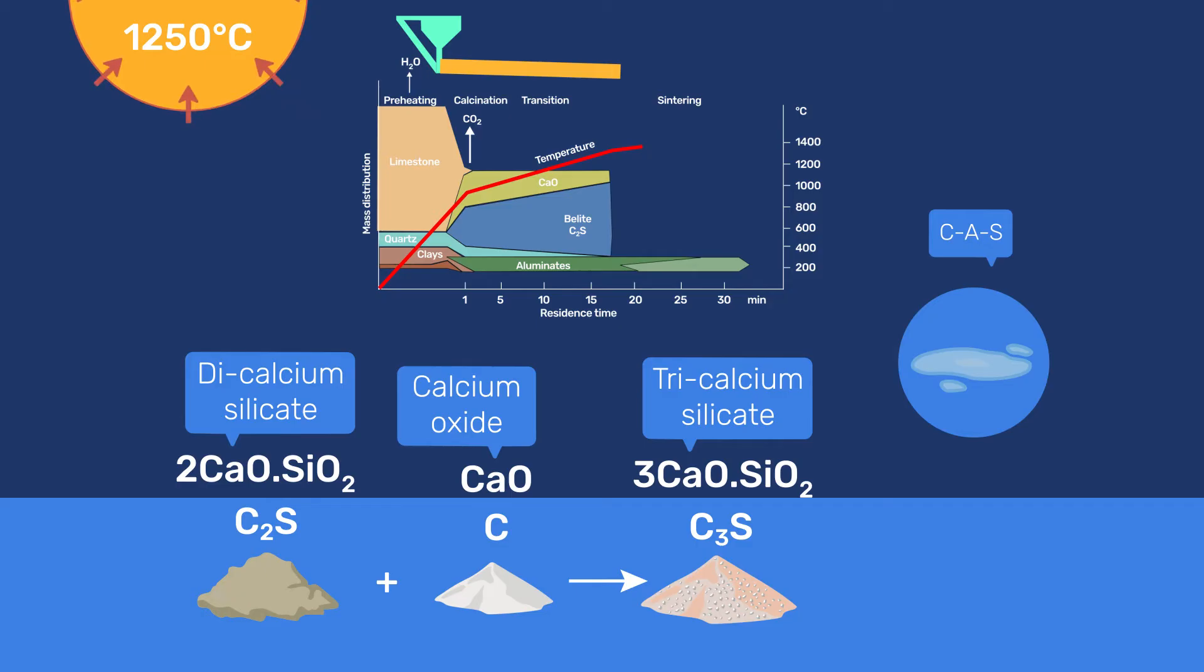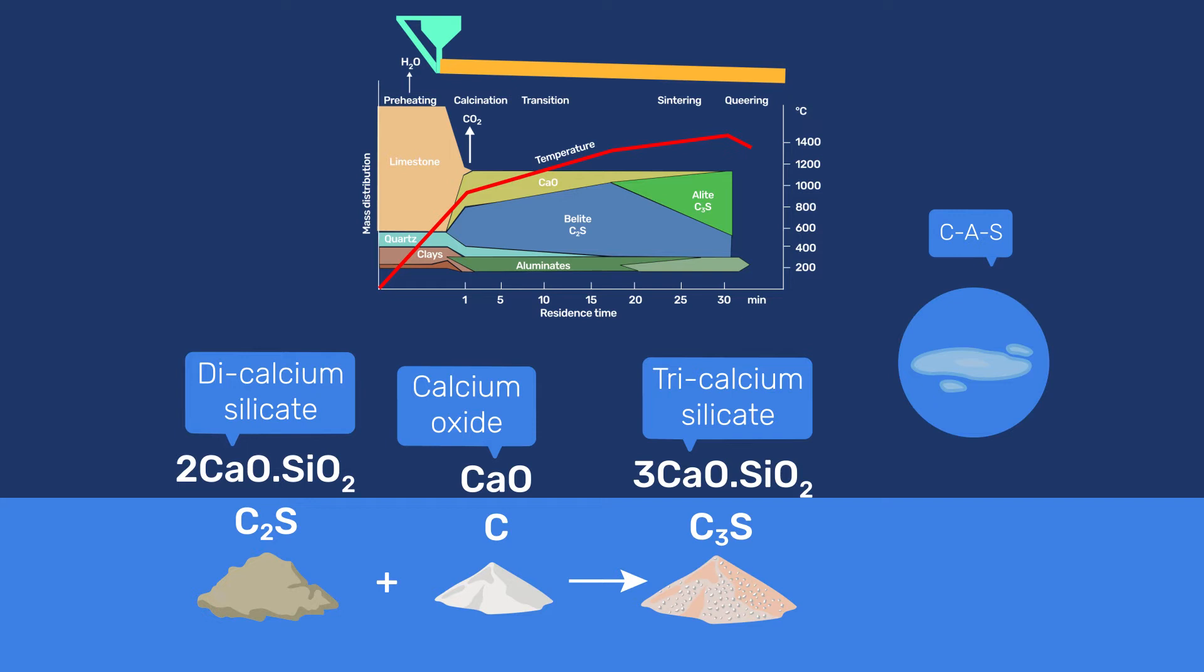The reaction forming C3S becomes thermodynamically favorable at temperatures above 1250 degrees Celsius. However, higher temperatures are needed for an effective reaction, so that kilns typically aim to achieve a maximum temperature of 1450 degrees Celsius, whereby the rate of C3S formation is enhanced by the aluminate melt that increases the mobility of the reactants.